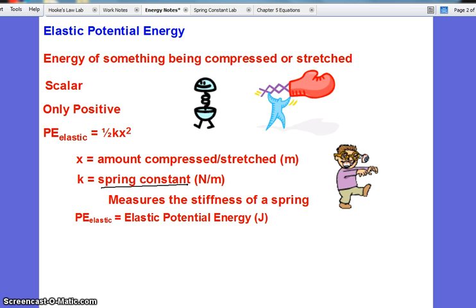So the springs in your car, the shocks and struts in your car have a very large spring constant compared to maybe that spring in your pen or a slinky, which would have a very small spring constant. The elastic potential energy, just like work, is measured in joules.